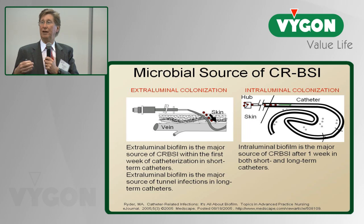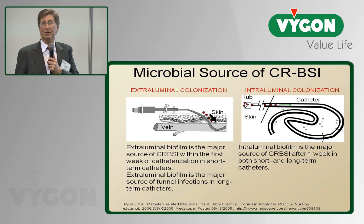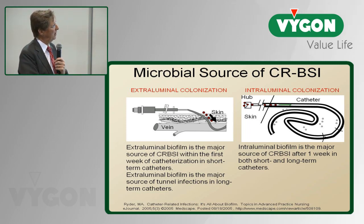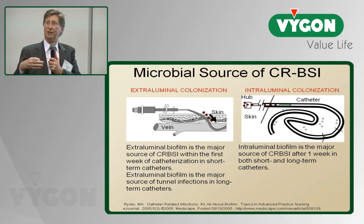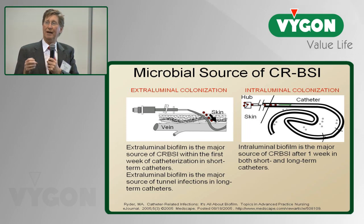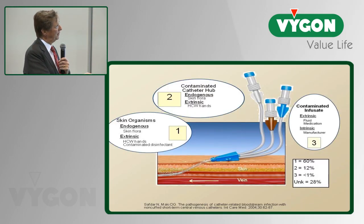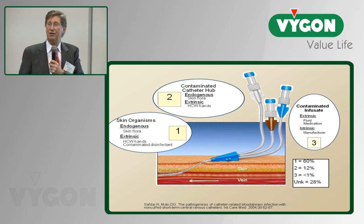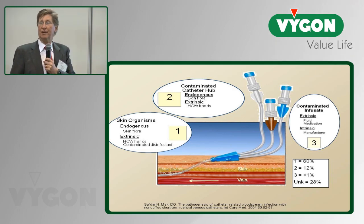But after that, you manipulate the needleless connector, you manipulate the IV line, you inject medications, you sometimes have stopcocks involved. And when that happens, you get contamination of the hub or the catheter. It's intraluminal colonization, following the same pathogenic mechanism of sticking to the inside of the catheter, producing an exopolysaccharide or biofilm that protects it from the immune system, protects it from IV antibiotics, and can allow bloodstream infections to occur. This is thought to be the major source of central line-associated bloodstream infections after the first week of catheterization.